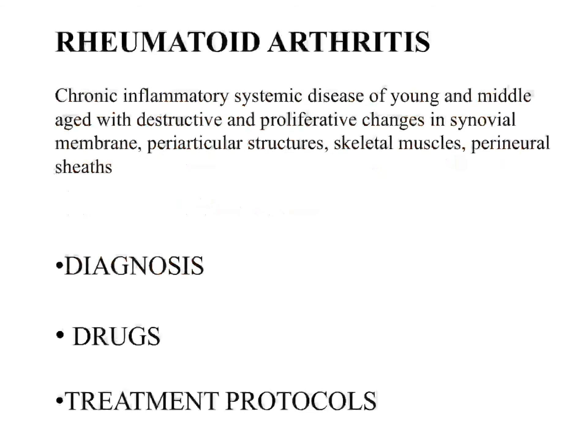Briefly about rheumatoid arthritis — each and every word in the definition is important and indicative of the pathology. It is a chronic inflammatory systemic disease of the young and middle-aged, with destruction and proliferation in the synovial membrane, periarticular structures, skeletal muscle, and the perineural sheath.